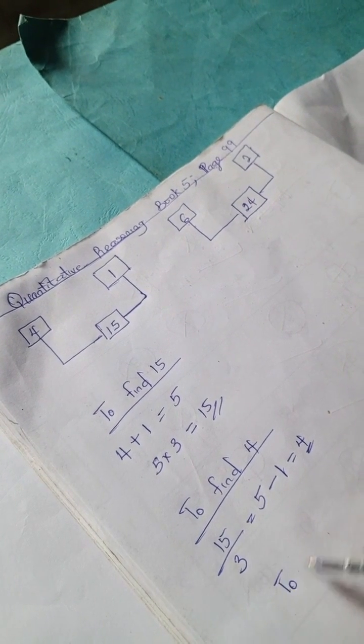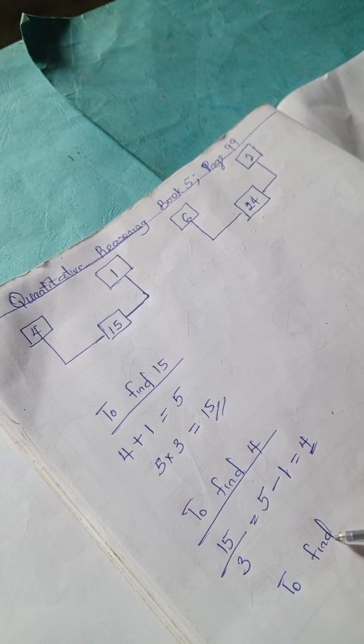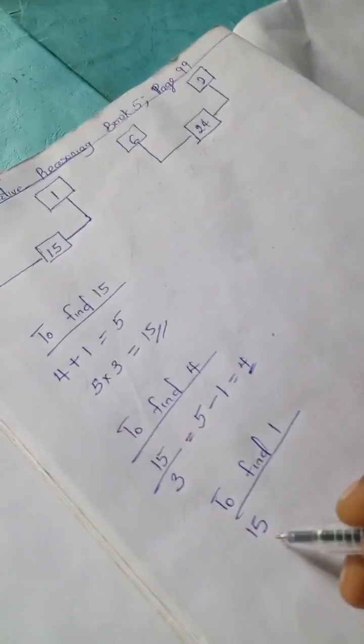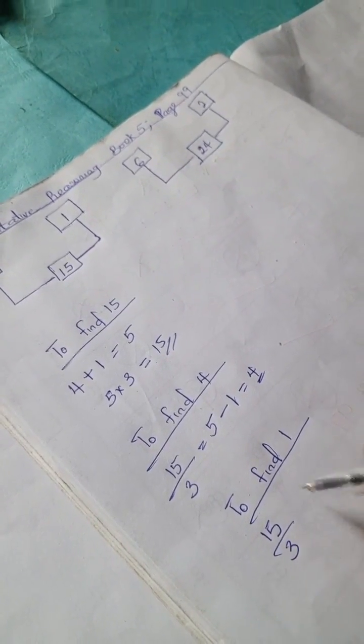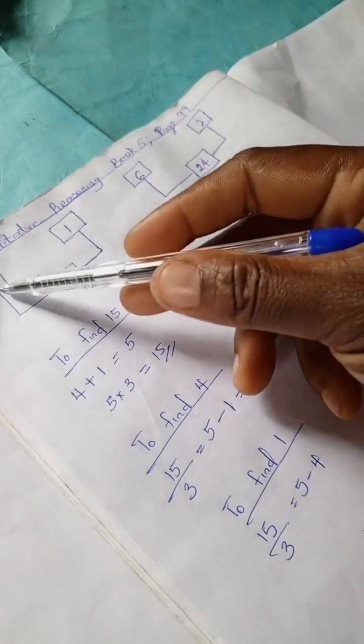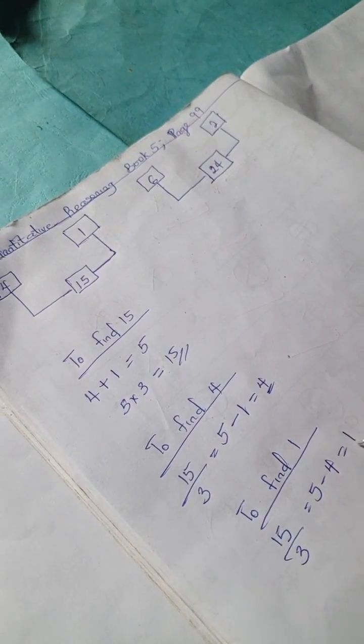Next, to find 1: 15 divided by 3 equals 5. 5 minus 4 equals 1.